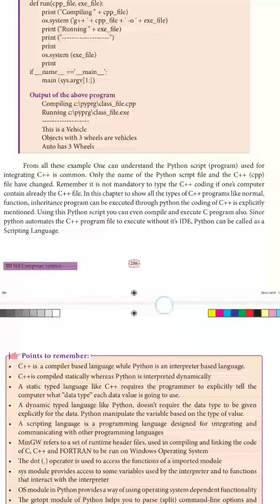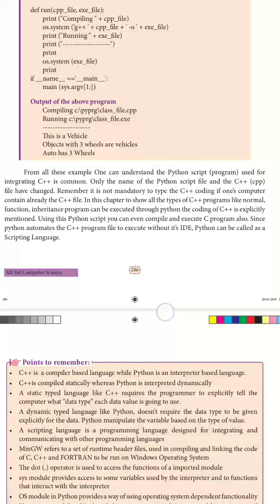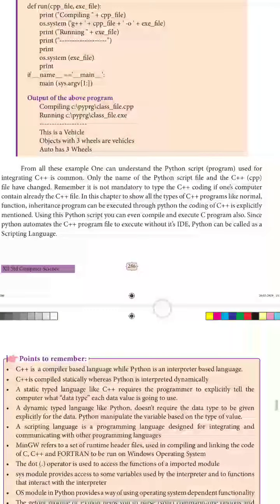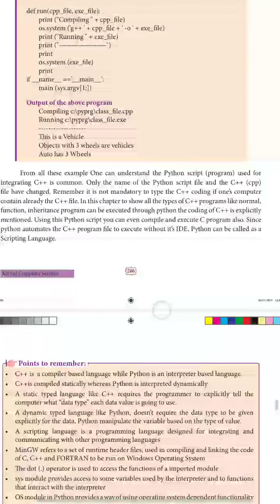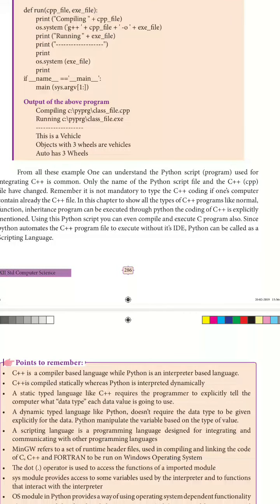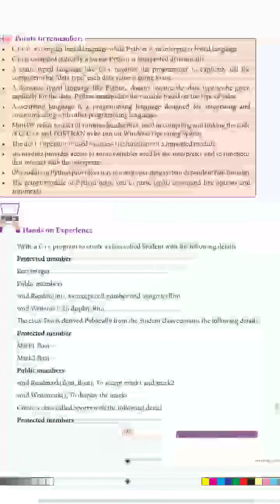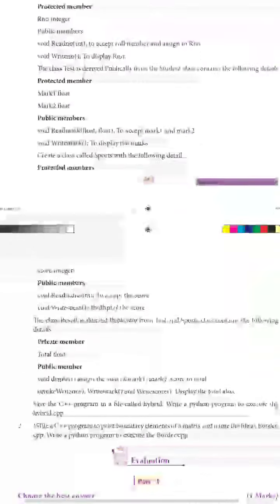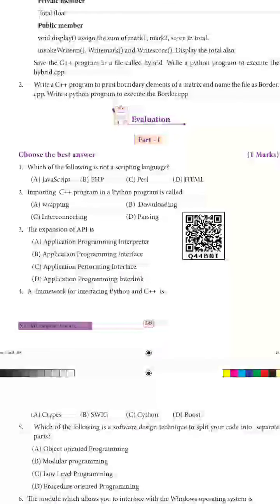Since Python automates the C++ program files to execute without an IDE, Python can be called a scripting language. With this we are finishing this chapter and will be seeing a new chapter in the next class. There are some textbook exercises — I have already sent the full solution for the book back exercises. You can find it, and if you have any doubts you can ask me. Thank you, students.